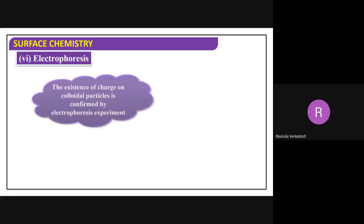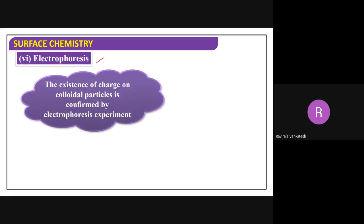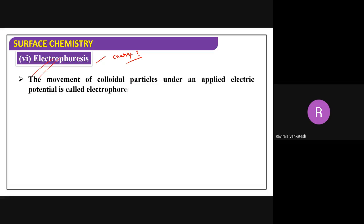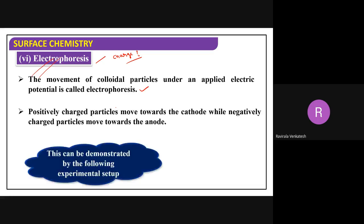Next, electrophoresis: the existence of charge on colloidal particles is confirmed by the electrophoresis experiment. This tells us what type of charge the colloid carries. The movement of colloidal particles under the influence of an applied electrical potential is called electrophoresis.